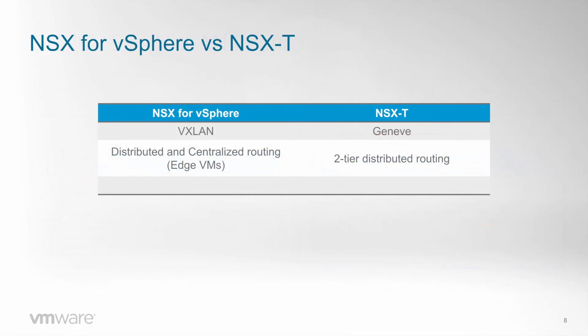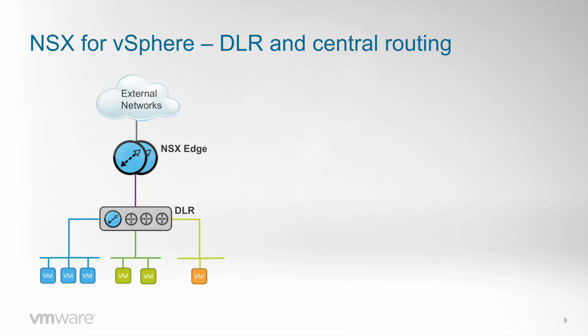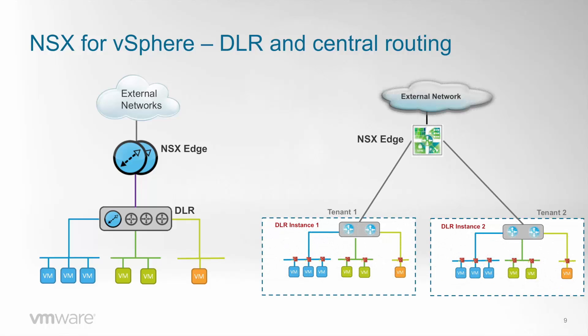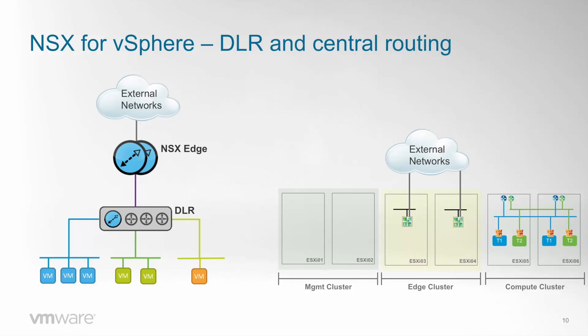The second main difference is that NSX for vSphere has a distributed and a centralized routing layer, while on NSX-T all routing is distributed. On NSX for vSphere, we have distributed routing — the DLR on the picture — and the NSX Edge, which is a VM that routes between NSX and the external networks. If we have two tenants or two projects that need to talk to each other, typically each one will have its own DLR, and both of them will communicate through the NSX Edge. If we look at the physical topology, even if VMs from two projects are on the same host, traffic needs to go back and forth to the NSX Edge.